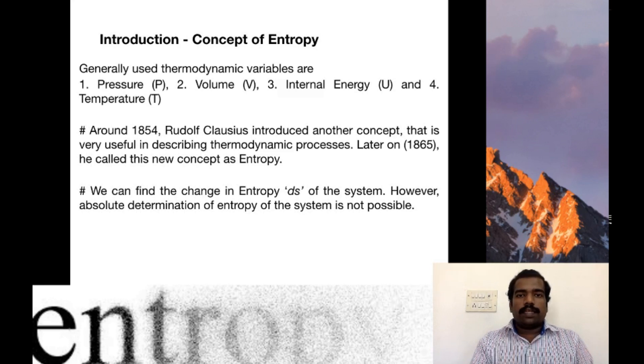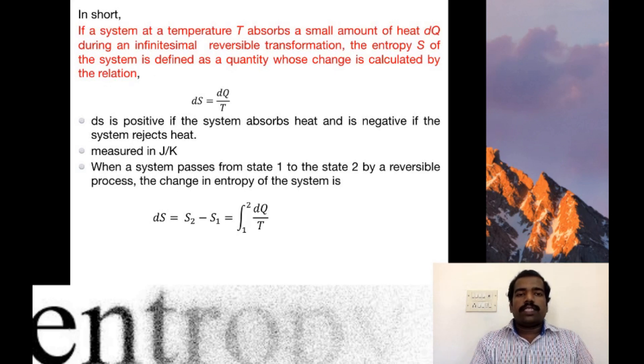There is an important thing while considering Entropy: we can find the change in entropy, dS, of the system. However, the absolute determination of entropy of the system is not possible. In short, if a system at temperature T absorbs a small amount of heat dQ during an infinitesimal reversible transformation, the entropy S of the system is defined as a quantity whose change is calculated by the relation dS = dQ/T. Here, dS is positive if the system absorbs heat and negative if the system rejects heat. It is measured in Joule per Kelvin.